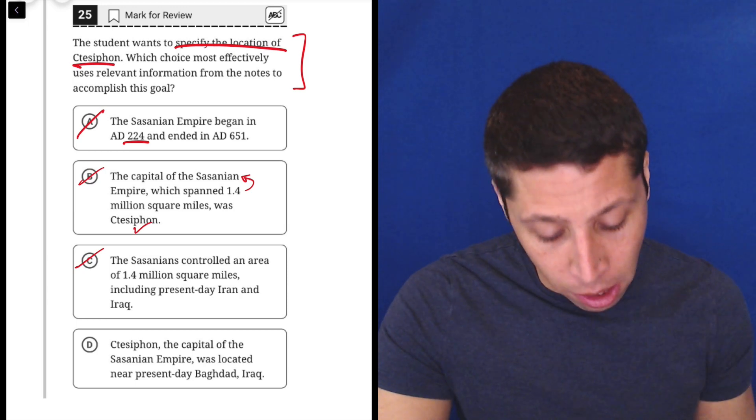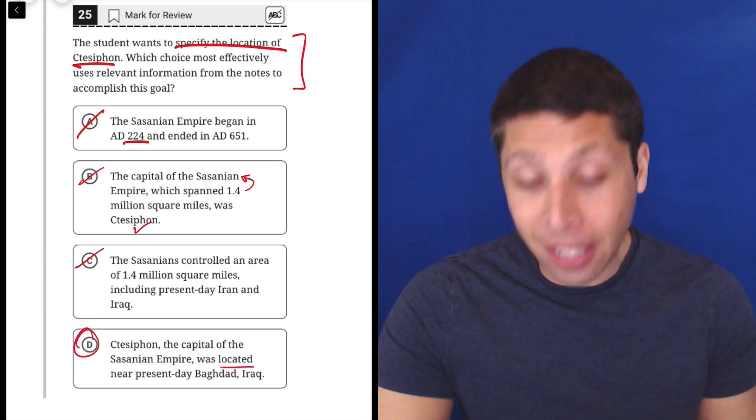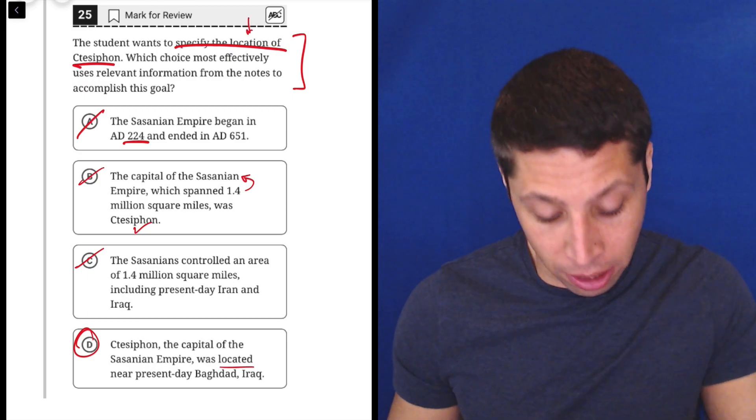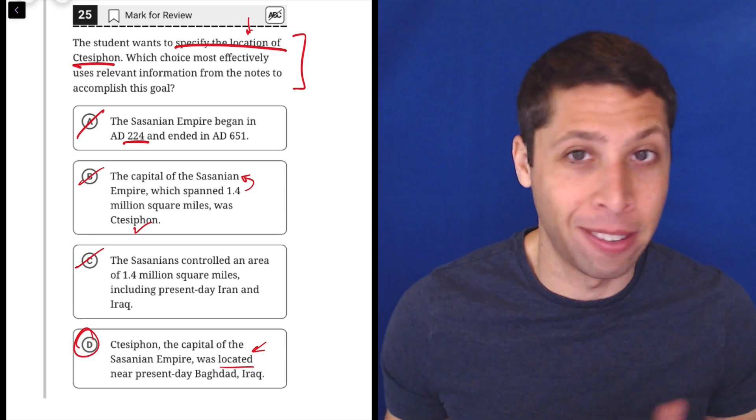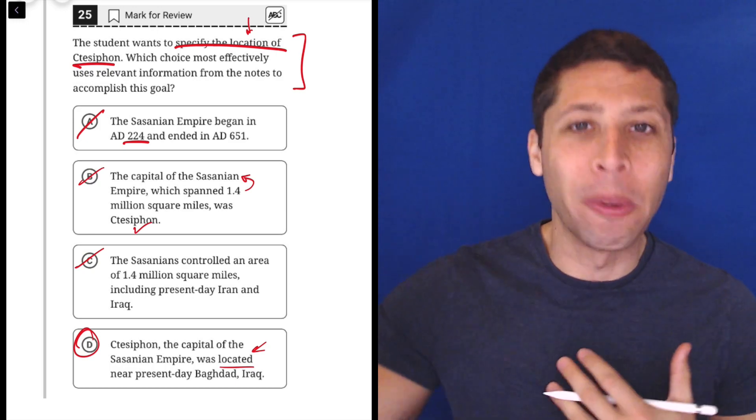Ctesiphon, the capital of the Sassanian empire, was located near present-day Baghdad, Iraq. I mean, I told you these were easy, right? It literally says specify the location, and this says it's located near Baghdad.